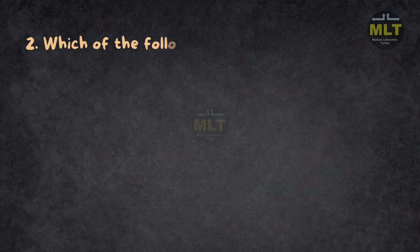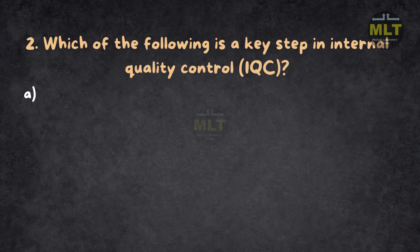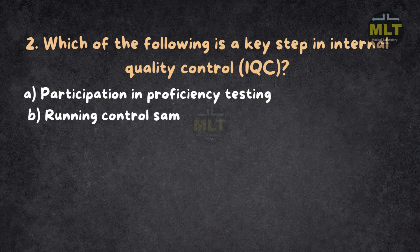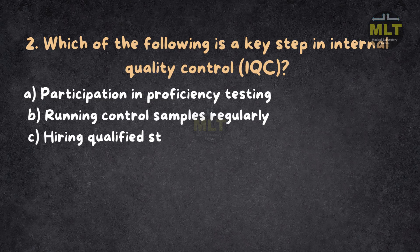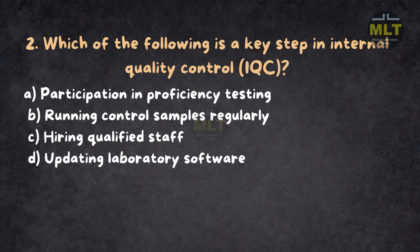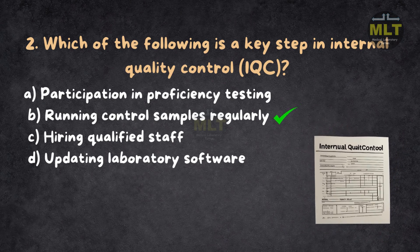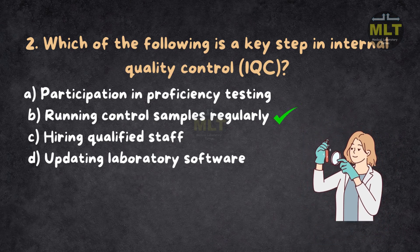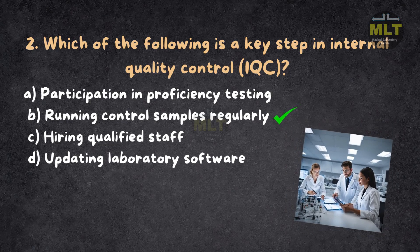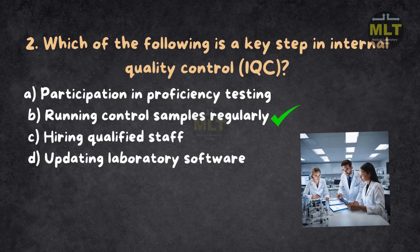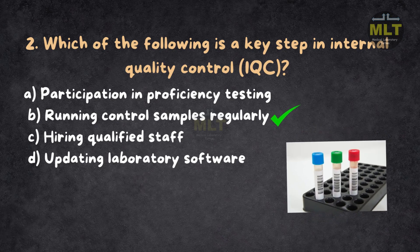Question 2: Which of the following is a key step in internal quality control? a. Participation in proficiency testing. b. Running control samples regularly. c. Hiring qualified staff. d. Updating laboratory software. Correct answer: b. Running control samples regularly. Internal QC involves daily monitoring using control samples to detect and correct errors in real time. Proficiency testing is external QC, not internal. Hiring staff or updating software supports QC but isn't a direct step. Control samples ensure proper functioning of lab instruments.